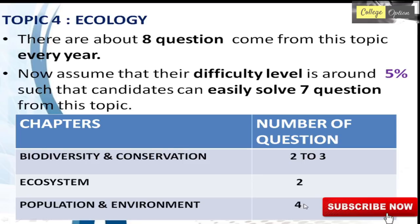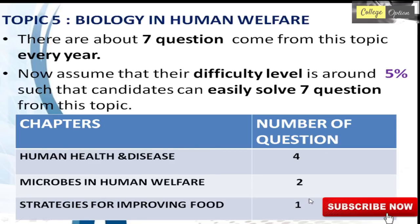The fifth topic is Biology and Human Welfare, with about 7 questions asked every year. The difficulty level is about 5% and candidates can easily solve 7 questions. There are three chapters: Human Health and Disease with 4 questions, Microbes in Human Welfare with 2 questions, and Strategies for Improving Food with 1 question.